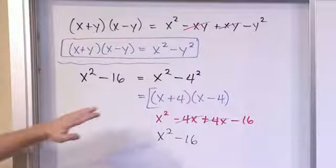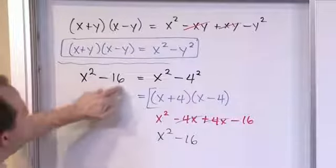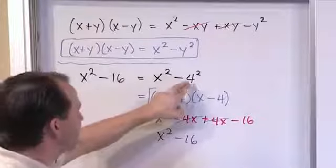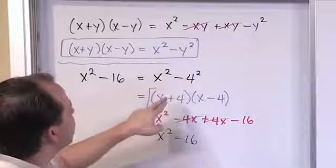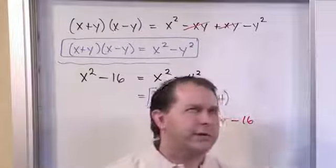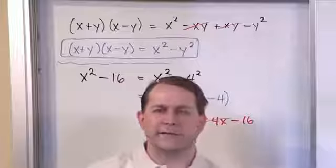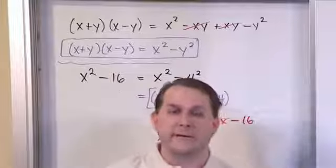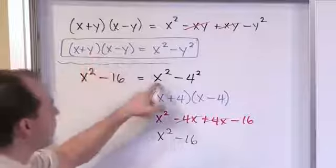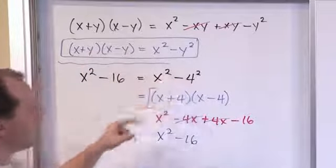So anytime you see something that's a difference of two squares, you might have to rewrite part of it to make it look like a square. But once you have the difference of two squares, you can immediately write the factored form. You don't have to think. You don't have to think about what do I have to multiply it by, like all the stuff we were doing when we were factoring. You literally just write x plus y, x minus y. Whatever x and y are in our little representation.